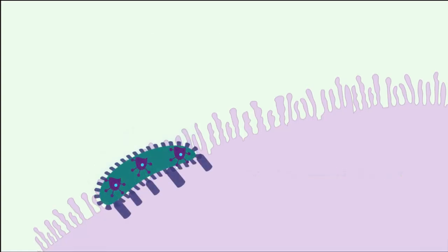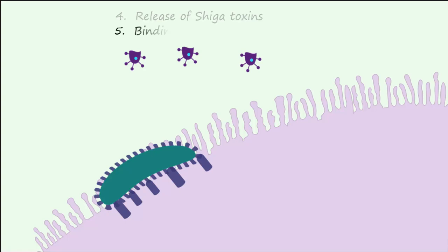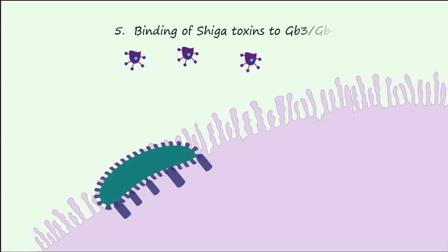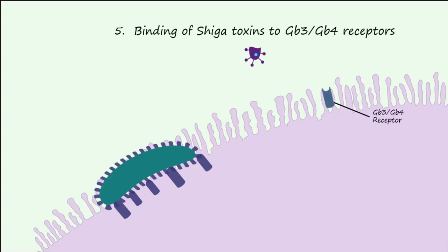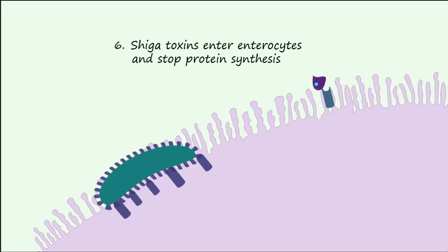At this point, shigatoxin is released by the bacteria. On the surface of the enterocyte, shigatoxin binds to its receptor called GB3 or GB4. The toxin is then internalized. Inside the cell, it acts to stop protein synthesis.